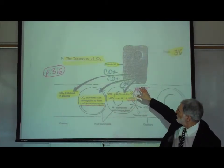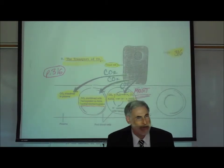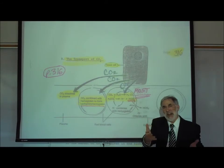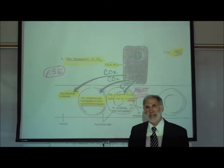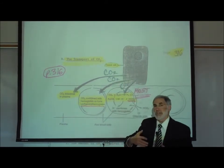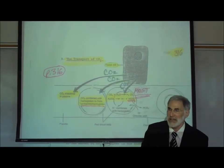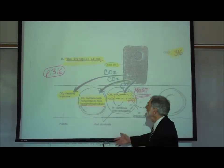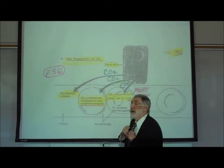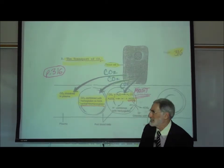The picture we see is a tissue cell — it could be a muscle cell or any other cell in the body — and it's generating carbon dioxide from cellular respiration. The carbon dioxide is diffusing into the bloodstream, into the capillaries and then veins of the body. Our question is: what happens to the carbon dioxide?